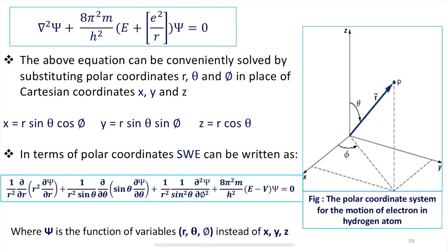This is the Schrödinger wave equation written in terms of polar coordinates, where ψ is a function of the polar coordinate variables R, θ, and ψ — as seen from the partial derivative ∂ψ/∂R. We have replaced the Cartesian coordinates x, y, z with polar coordinates R, θ, and ψ, and the Schrödinger wave equation takes this form when considered for the hydrogen atom.